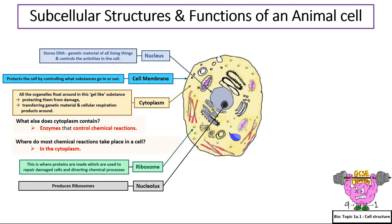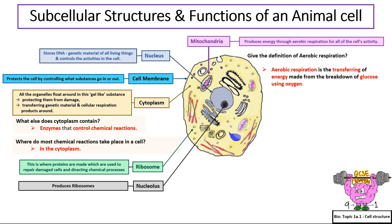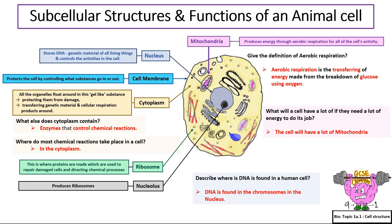What is the function of a nucleolus? The nucleolus produces ribosomes. What are mitochondria needed for in a cell? They produce energy through aerobic respiration for all the cell's activity. Give the definition for aerobic respiration: aerobic respiration is the transferring of energy made from the breakdown of glucose using oxygen. What will a cell have a lot of if it requires a lot of energy? The cell will have a lot of mitochondria. Describe where DNA is found in a human cell: DNA is found in the chromosomes in the nucleus.